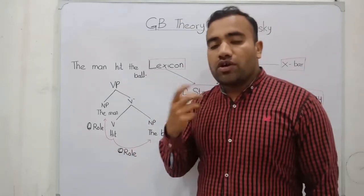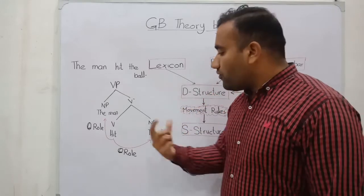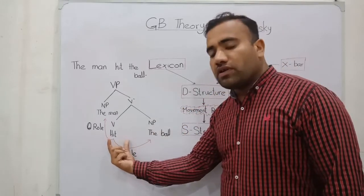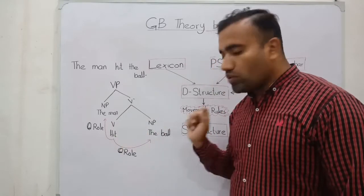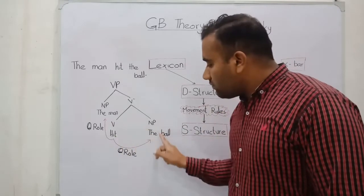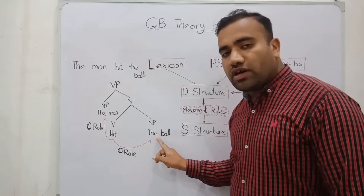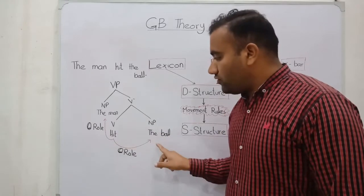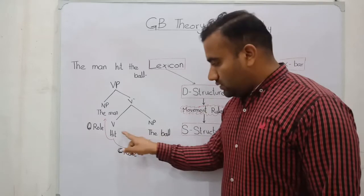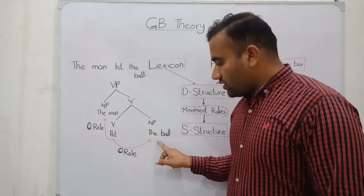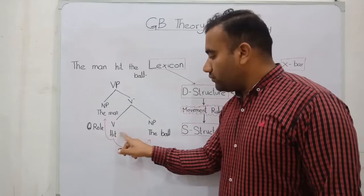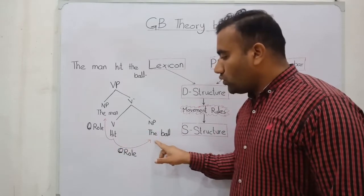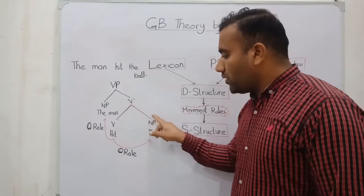How we assign the roles: first we have the head word that is the V. It assigns the theta role at the complement position, and this is the internal argument of VP. This assigns 'the ball' the theta role. This is within the local domain because we have the binary branch.